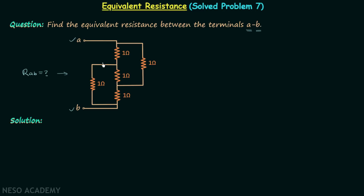As you observed, in this network with this arrangement we cannot see series or parallel combinations of resistors. Therefore we will name the nodes present in this network and reconstruct it from scratch. This terminal is node A, this node here is node B, this node is node C, and this node here is node D.